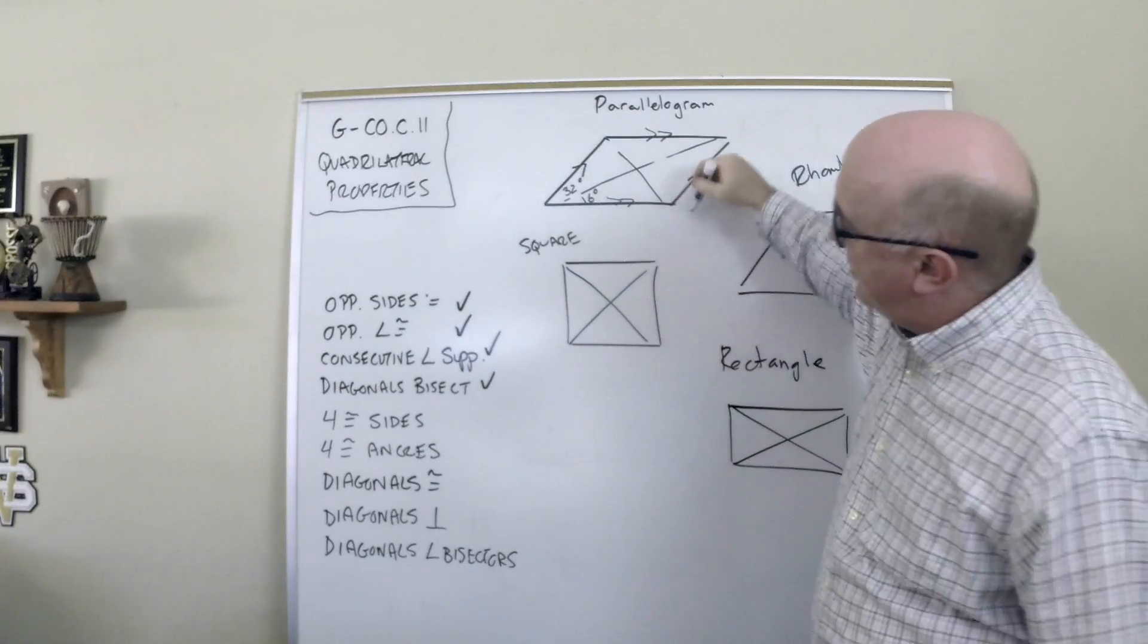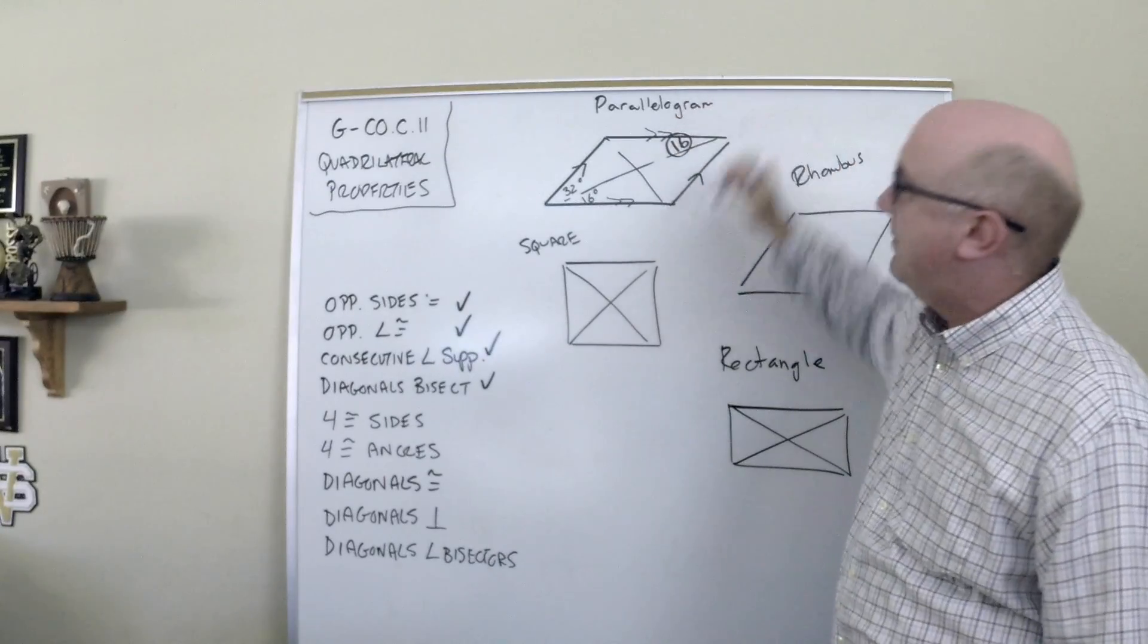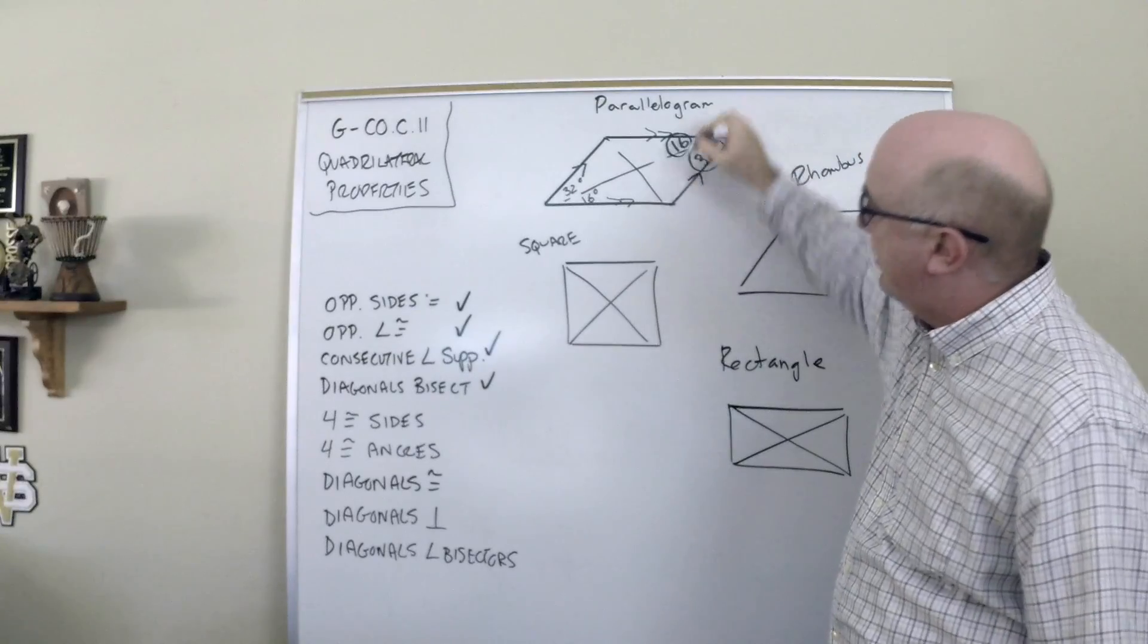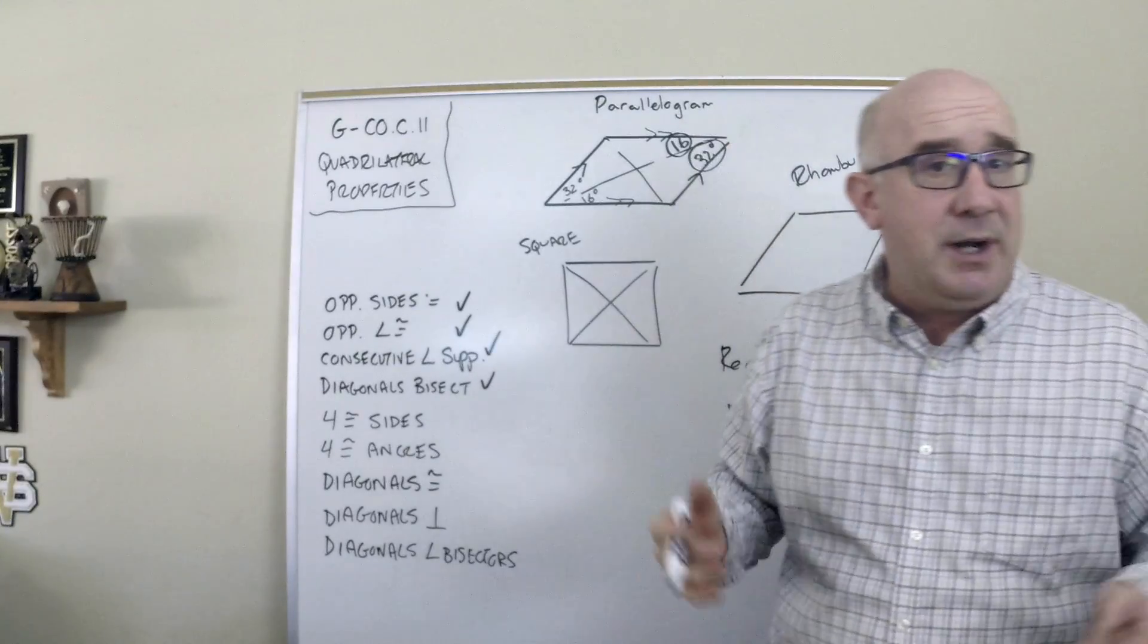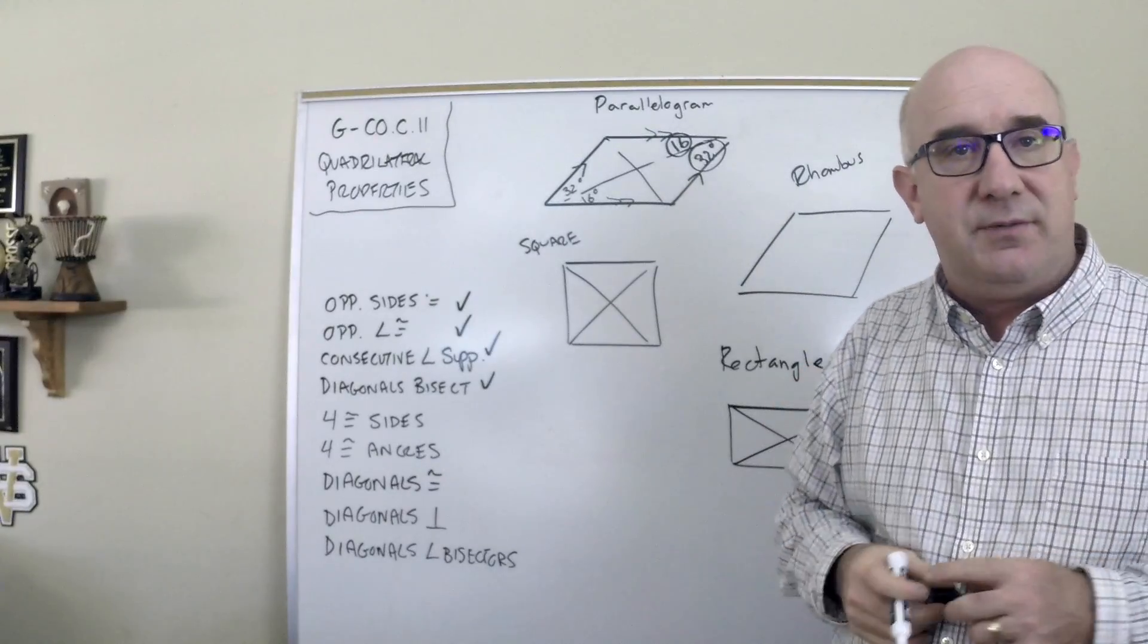And so alternate interior would help you to get to know this angle here. Alternate interior would help you to get to know this angle here. Maybe they want you to find other angles and so on. But again, I'm using the properties of what I know.